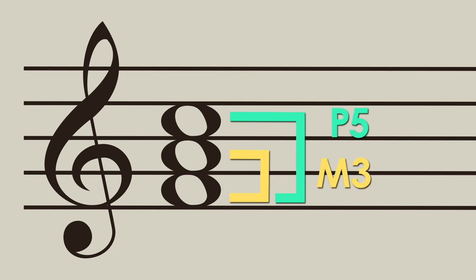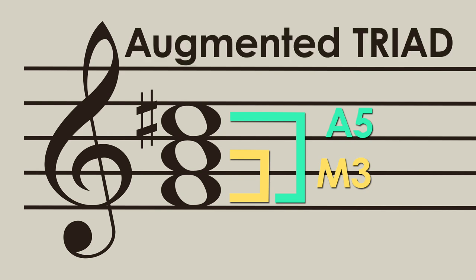If we go back to the major triad and raise the fifth a half step, it's now an augmented fifth, and a triad with a major third and an augmented fifth is called an augmented triad.